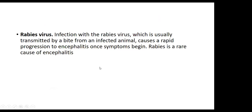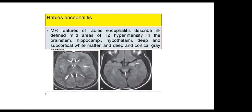Rabies virus infection is usually transmitted by a bite from an infected animal and causes rapid progression to encephalitis. The MRI features of rabies encephalitis include ill-defined, mild areas of T2 hyperintensity in the brain stem, hippocampi, thalamus, hypothalamus, deep and subcortical white matter, and deep cortical gray matter — essentially widespread hyperintense signal.